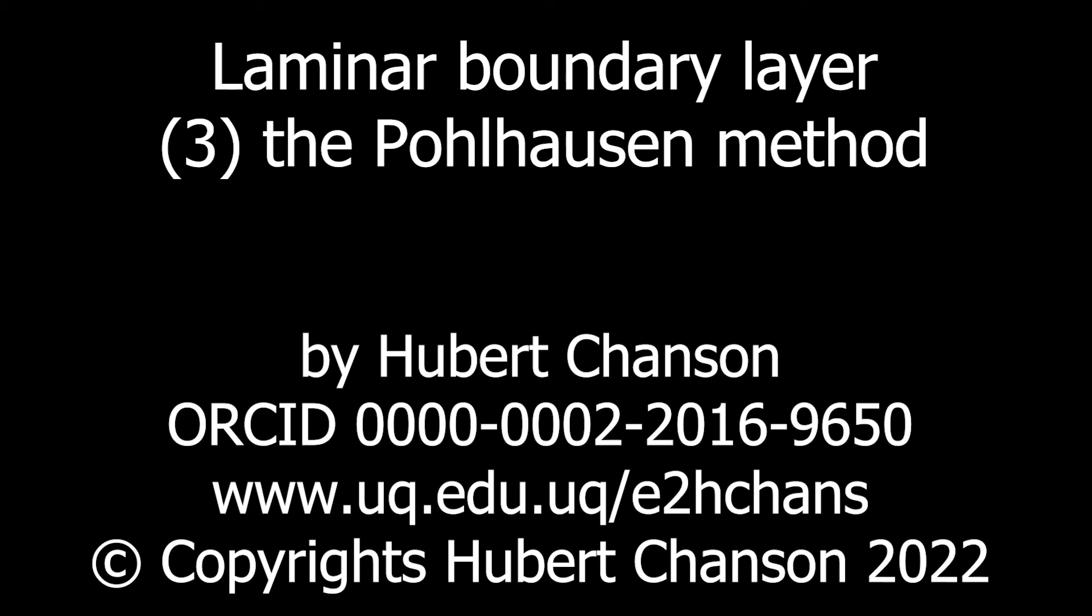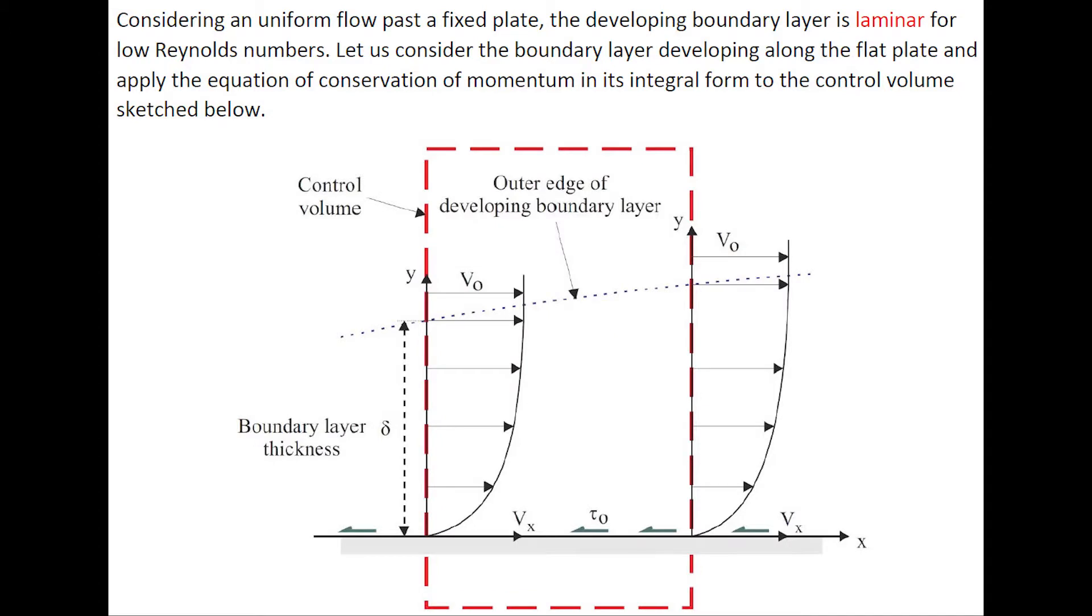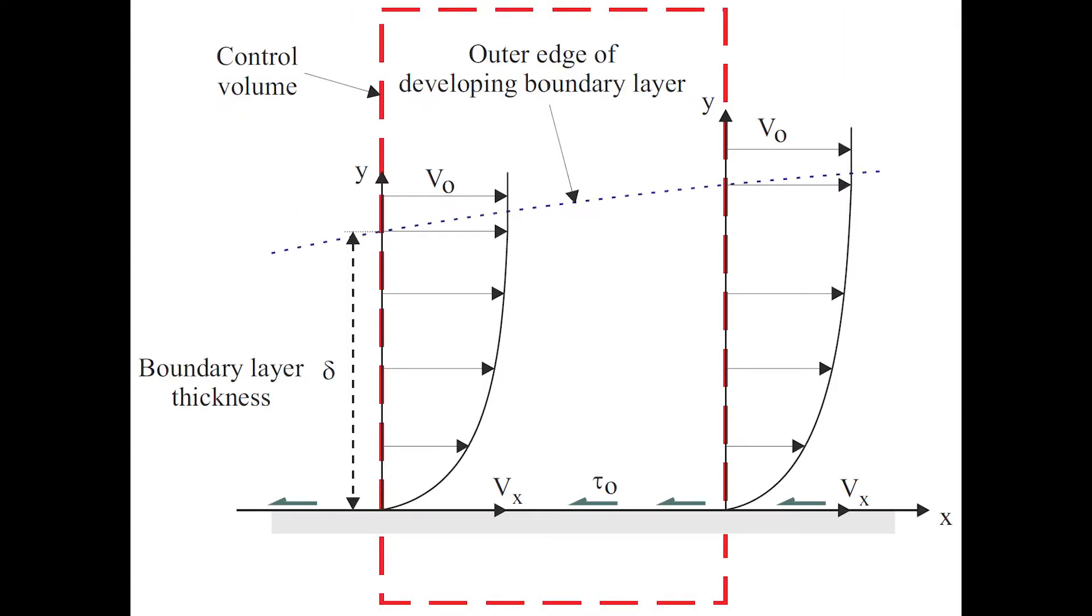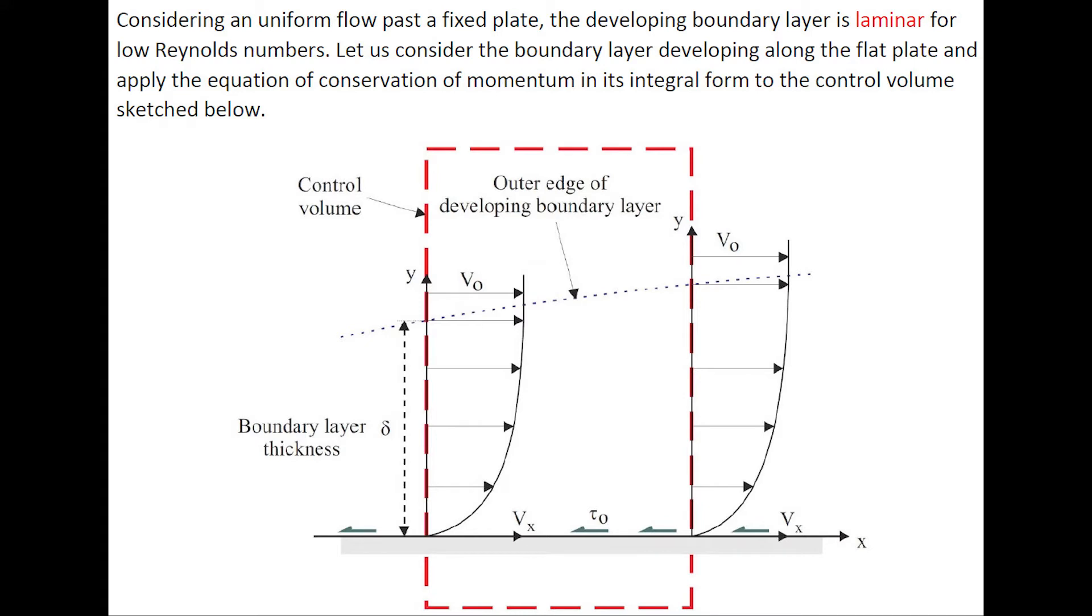Considering a uniform flow past a fixed plate, the developing boundary layer is laminar at low Reynolds number. Let us consider the boundary layer developing along the flat plate and apply the equation of conservation of momentum in its integral form to the control volume sketched in red below.